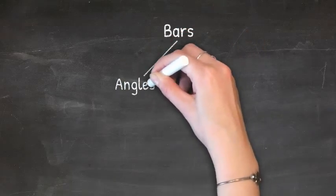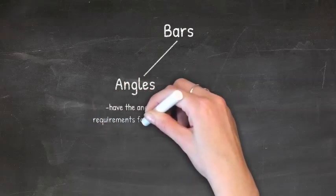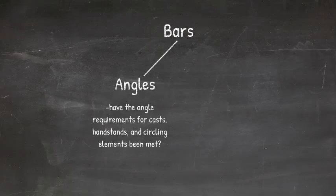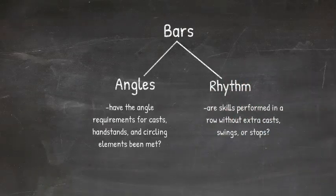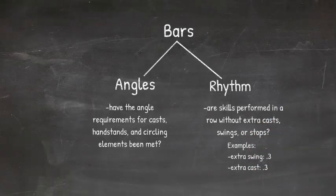On bars, angles are very important. Judges use their eyes to assess the angle of a gymnast's cast, circling elements, and handstands at higher levels, checking that she achieved the minimum required angle for each skill. If not, that is a deduction. Rhythm is also huge on bars — skills should be performed in a row without extra swings, stops, or casts. A deduction for an extra cast or extra swing is three tenths, which can add up quickly if a gymnast repeatedly adds that extra cast or swing.